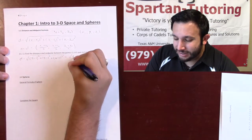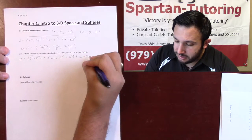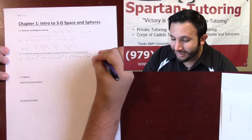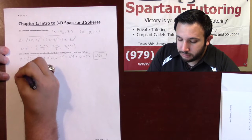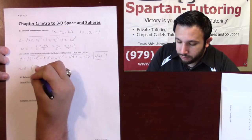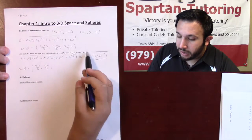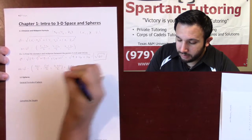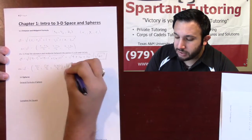4 minus 1 is 3, squared that's 9. Plus here it's going to be 4, and 4 squared is 16. Plus 6 squared is 36. Adding all these together: 9 and 16 is 25, and then that's going to be 61. So the distance between these two points is the square root of 61. For the midpoint, it's basically the average between the x's, the y's, and the z's: (4 plus 1) over 2, (5 plus 1) over 2, and (6 plus 0) over 2 — giving us 5/2, 3, and 3.